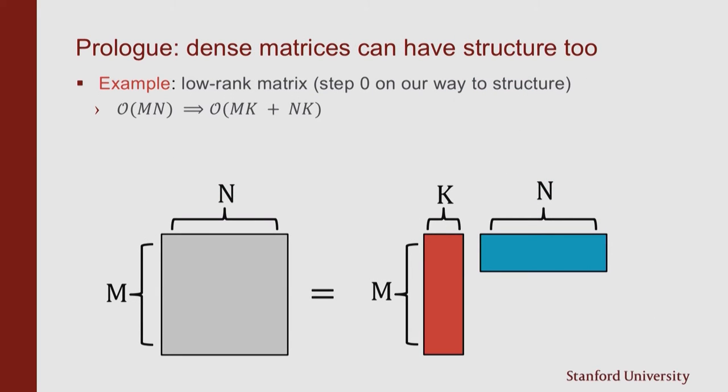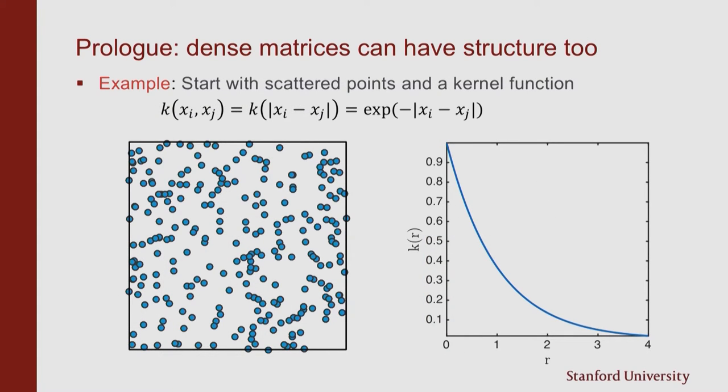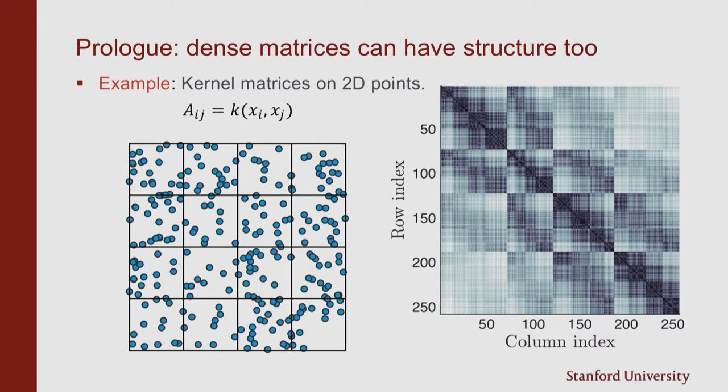But what I want to talk about is dense matrices that have a similar sort of structure. So just as a quick review, a low rank matrix is going to be some matrix where you have n degrees of freedom on the rows and on the columns. And you can factor it into something that is in some sense data sparse. So before we had order m n degrees of freedom, each number in this matrix. Now we have something like order m k. So if k is small, if the rank is low of this matrix, you've compressed it. This is an important building block in looking at the structure for dense matrices. So to build a dense matrix, here's an example that's going to come up in Gaussian processes later. Let's just take a whole bunch of scattered data points in two dimensions. And we're going to have some kernel function.